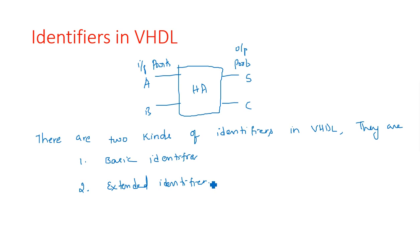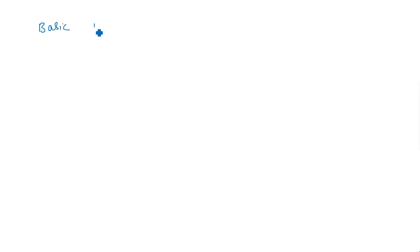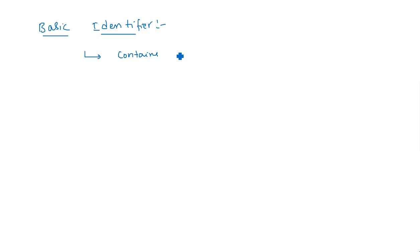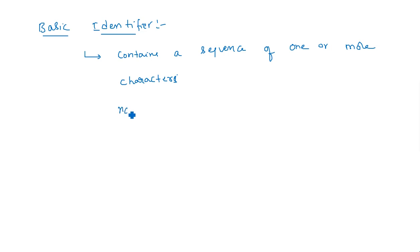Let us first see what we mean by a basic identifier. Basic identifiers in VHDL consist of a sequence of one or more characters. For example, we can give the name 'adder' — that is a sequence of characters A, D, D, E, R. Likewise, a name may also consist of numbers or different characters such as underscore and small or capital letters.